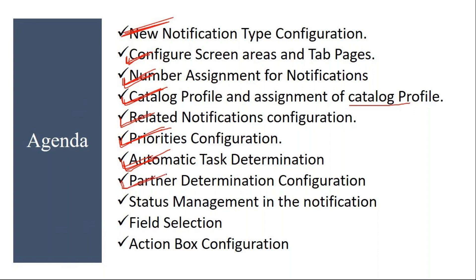Then partner determination configuration — how to determine the partners. Then status management: system status and user status. Then field selection — if you want to make a field mandatory, how to do that. Then we will see action box configuration. We will create a new notification type and do the entire configuration, and then verify whether that configuration is working by creating a new notification with that notification type.